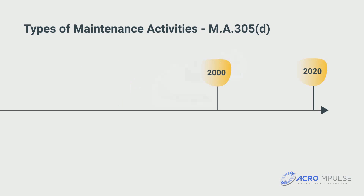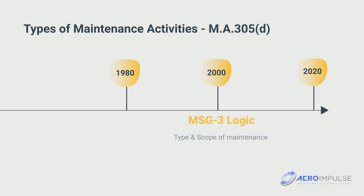This changed, at the latest, at the beginning of the 1980s. Since then, the MSG-3 logic is used by all major aircraft manufacturers to determine the type and scope of maintenance.